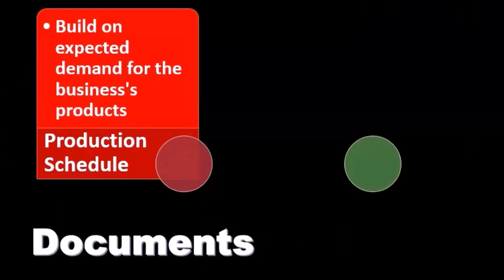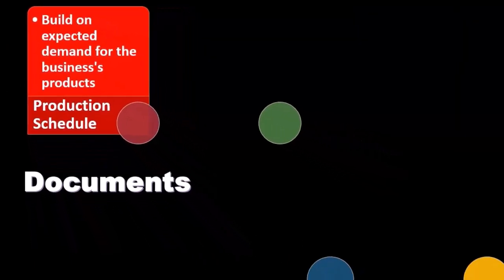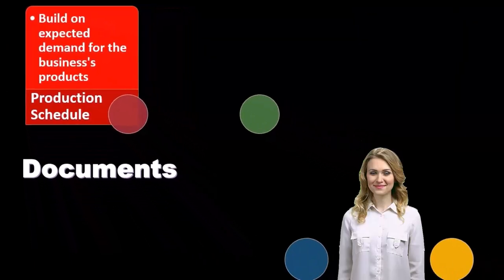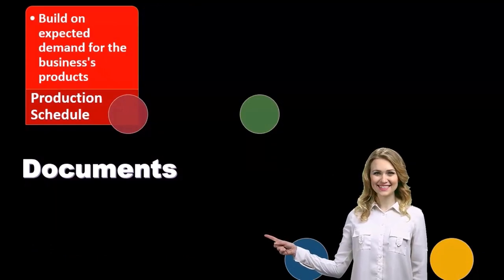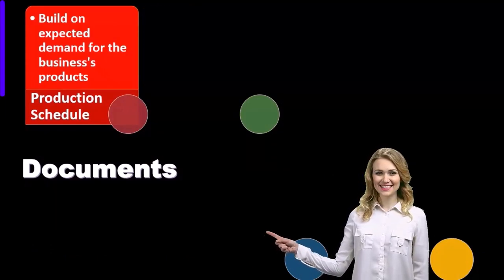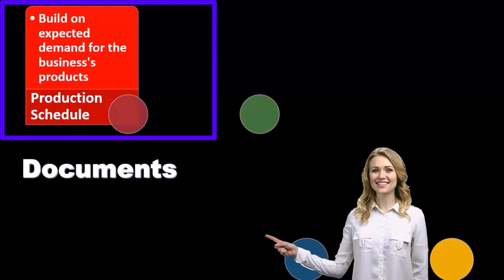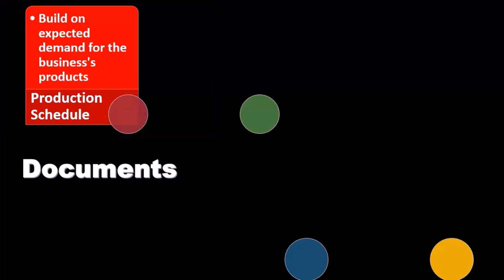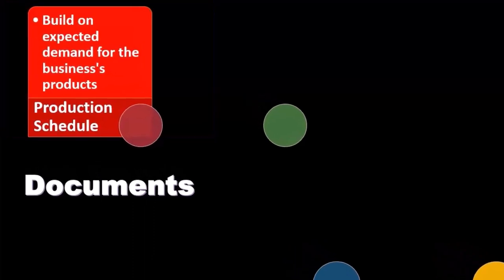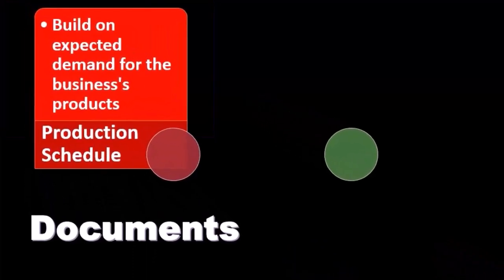Now we'll consider documentation related to inventory management, starting with the production schedule. The production schedule would be involved if we're in the production of inventory. If we're in the purchasing and selling of inventory, we wouldn't have the production-type components, depending on the type of industry we are in.